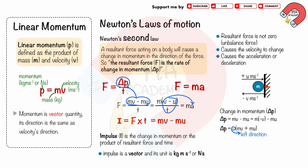During the hitting, the mass m exerts a force on the wall equal in size and opposite in direction to the force the wall exerts on mass m. This is because of Newton's third law of motion about action and reaction. The forces act on the mass and the wall for the same amount of time t.